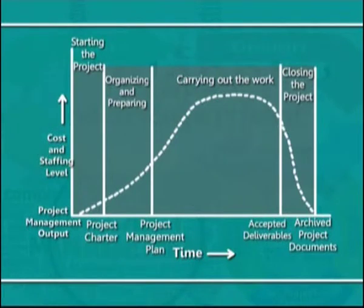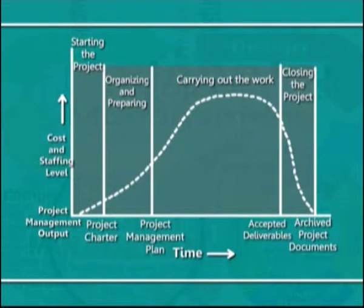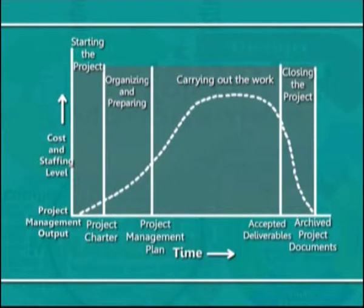Let us try to understand the different project life cycle phases. Most projects include at least four project life cycle phases: beginning of the project, planning and organizing the work of the project, performing the work of the project, and closing out the project. In the project development phase, there will always be a gradual build-up of resources. This will be followed by a long duration plateau where most of the expenditure would be incurred in terms of planning, organizing and performing tasks. Towards the end of the phase, there will be a rapid run-down as the project draws to the closure state.